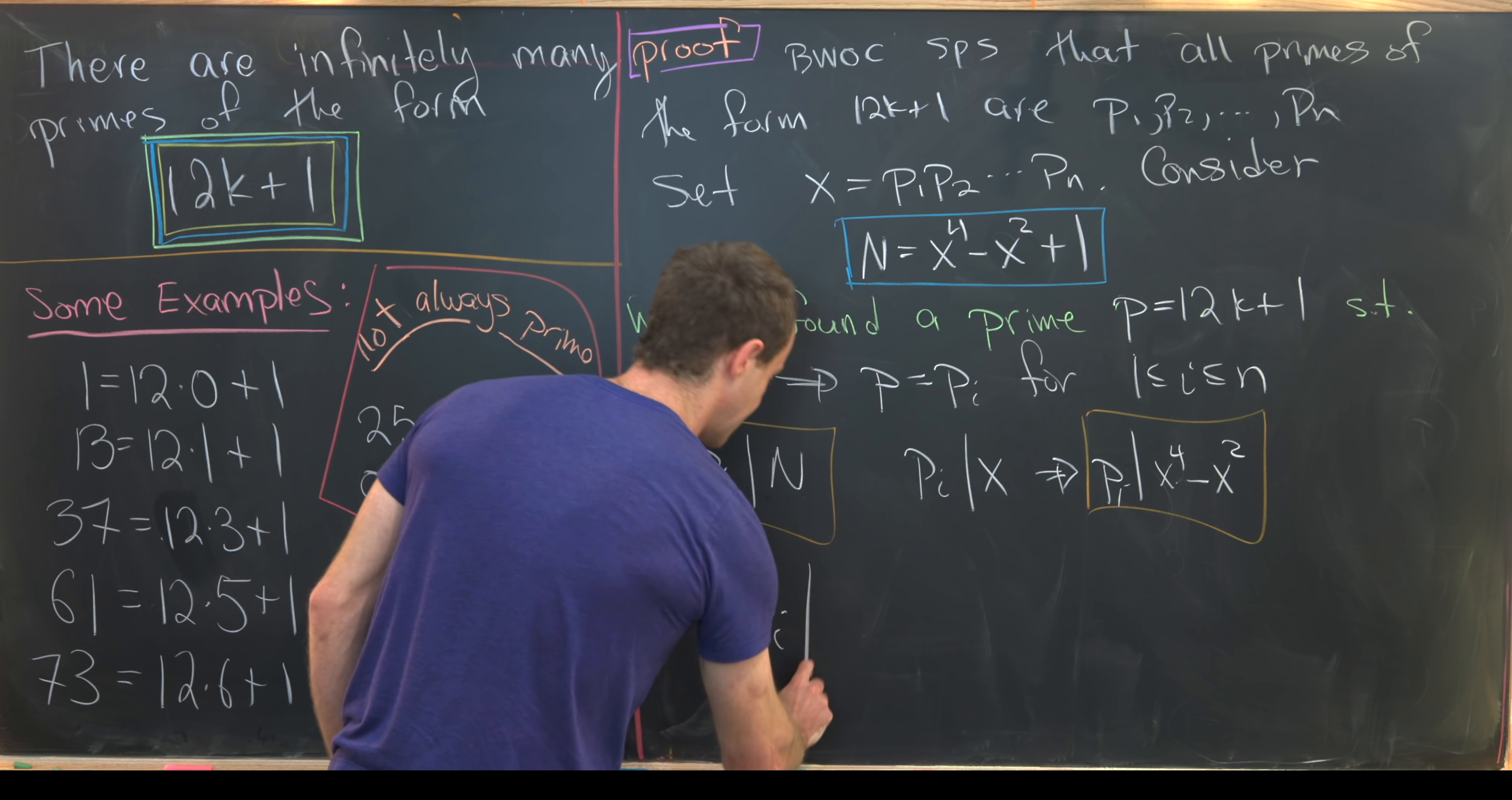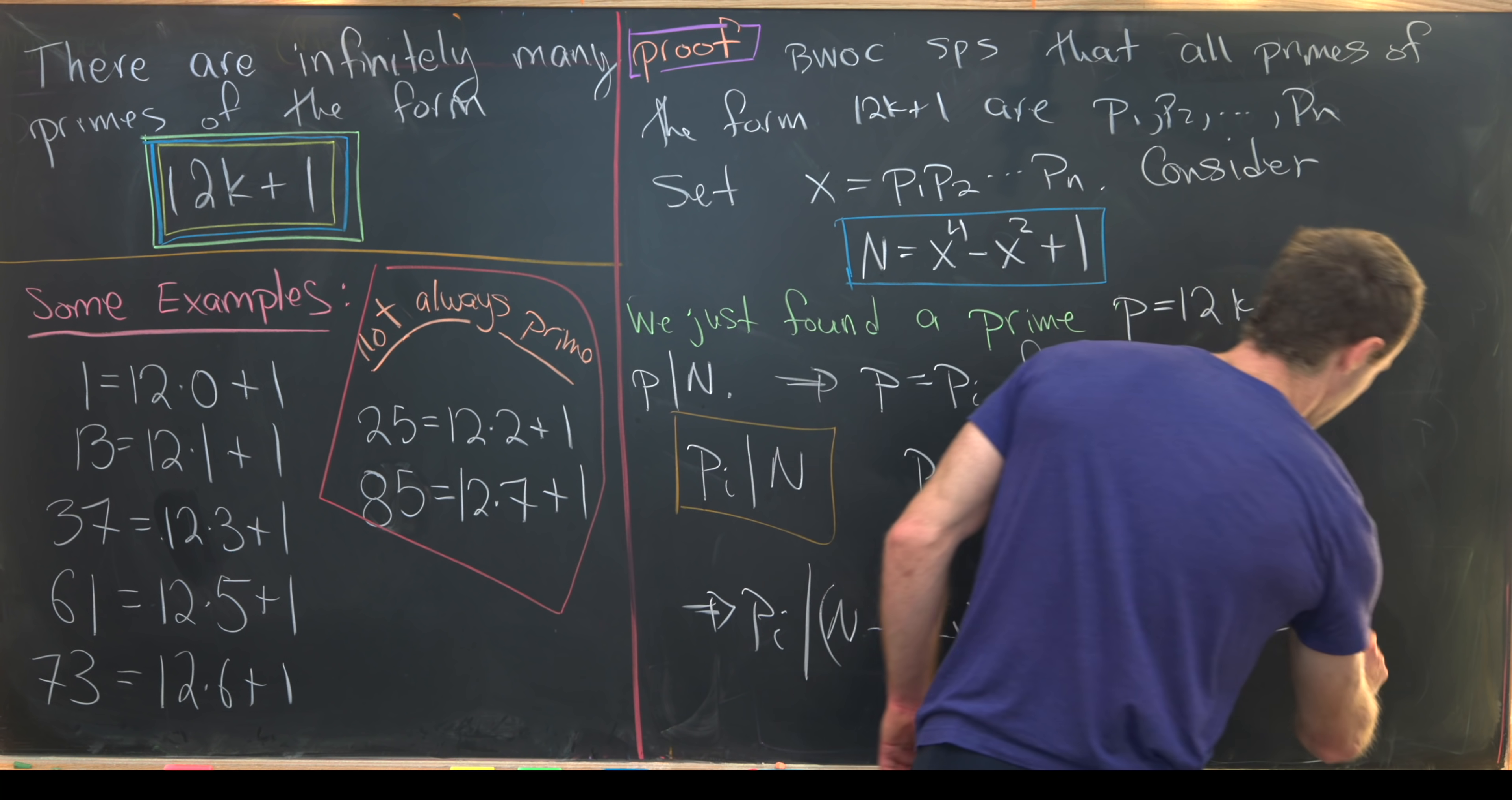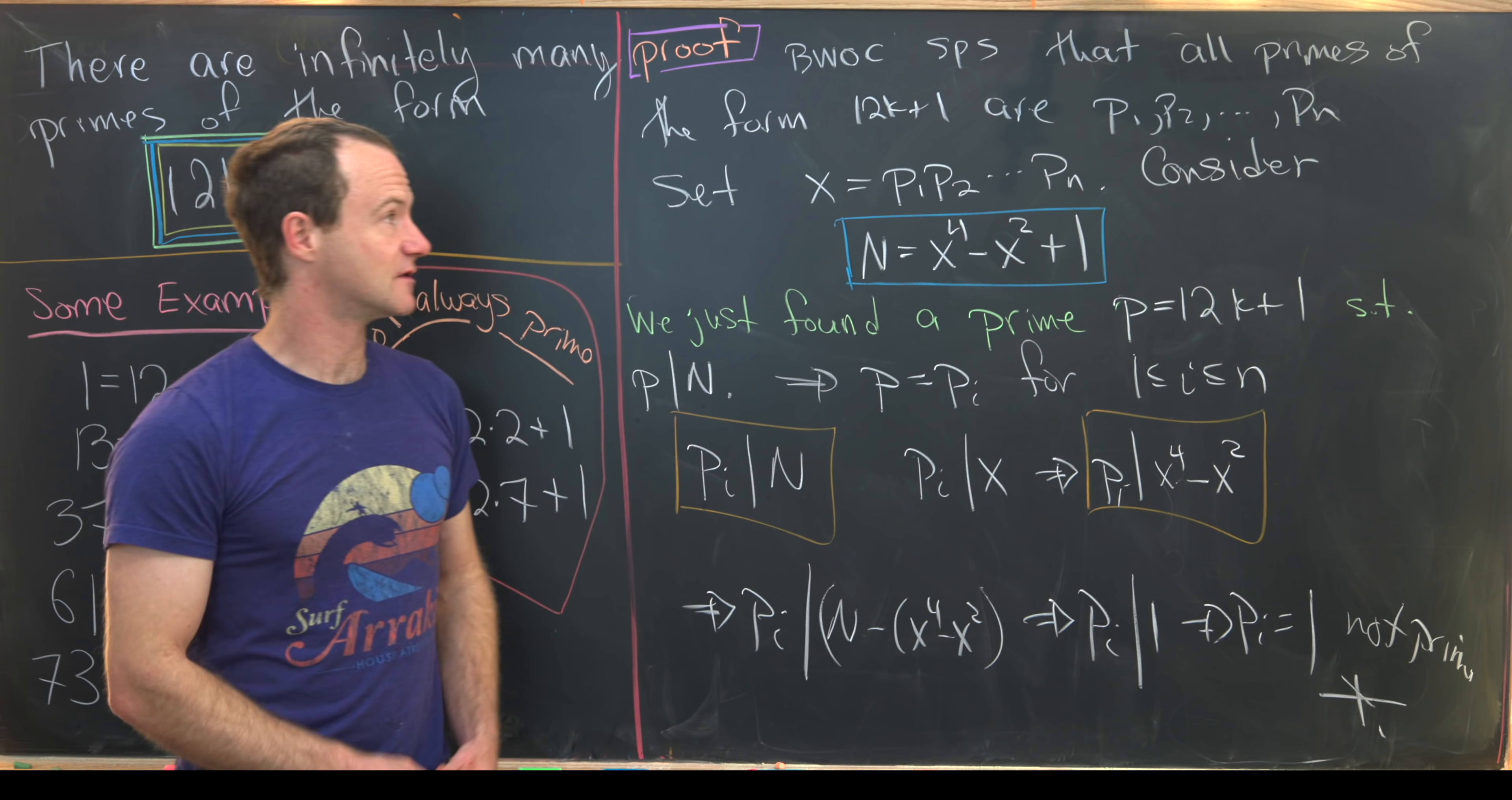So in other words, we have pi divides n minus x to the fourth minus x squared, which is the same thing as saying that pi divides the number 1, which is the same thing as saying that pi is equal to 1, but 1 is not prime. So that means we've reached a contradiction. Now we need to go up to the first place that we did not follow logic, but we made an assumption. And that means that assumption that we've made is false.